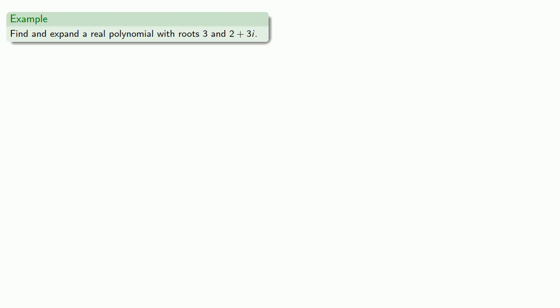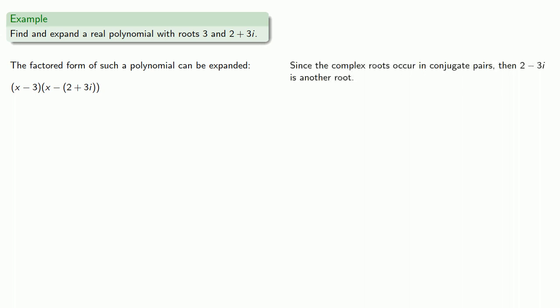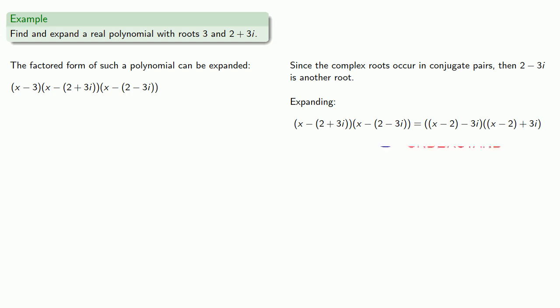If we have more roots, we include more factors. Here we have roots 3 and 2 plus 3i. The factored form must include x minus 3 and x minus (2 plus 3i). Since complex roots occur in conjugate pairs, 2 minus 3i is another root, giving us another factor. Let's expand the complex root terms first by rewriting: x minus (2 minus 3i) times x minus (2 plus 3i), again in the form (a minus b)(a plus b). That gives us a squared minus b squared, which we can expand and simplify.